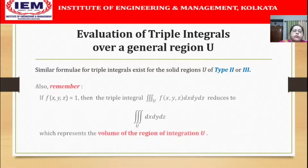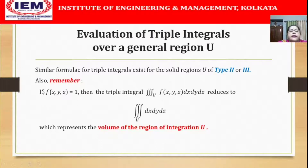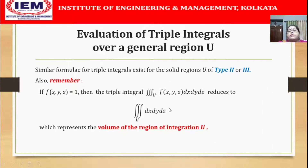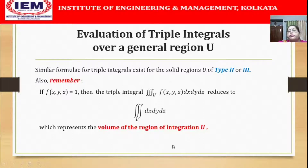Similar formulae also exist for regions of type 2 or type 3. One more important thing to remember: if the function f(x, y, z) equals 1, then the triple integral over region U reduces to the special triple integral of dx dy dz over U, which represents the volume of the region of integration U. This is because dx dy dz represents an elementary volume, and summing these over the entire region U gives the volume of U.